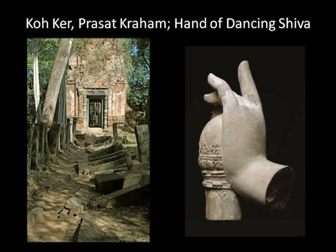As I said, things were on steroids — even the gate temple of Prasat Kraham, so called because it's of red brick, was very very tall and contained an enormous figure of dancing Shiva. One of whose hands you see here — this hand is 60 centimeters high — and they've got five of them in the National Museum, so you get some idea of the colossal nature of the statuary, as well as the temples.